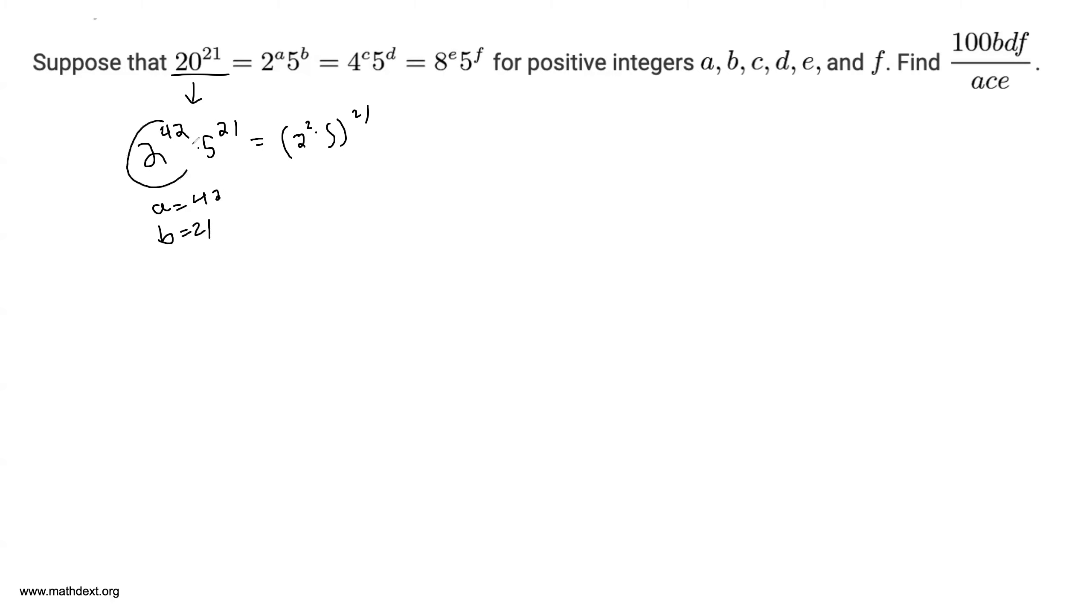However, we can also express 2 to the 42 as 4 to the 21, so it's equal to 4 to the 21 times 5 to the 21, and therefore c equals 21 and d equals 21.